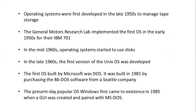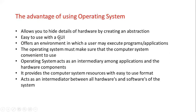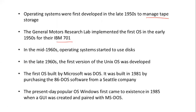Operating systems were first developed in the late 1950s to manage tape storage. The General Motors research lab implemented the first operating system in the early 1950s for their IBM 701. This is theory content provided for your reference and notes. In the middle 1960s, operating systems started to use disks.